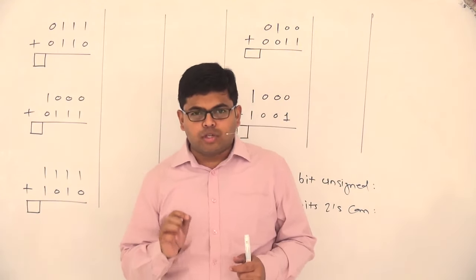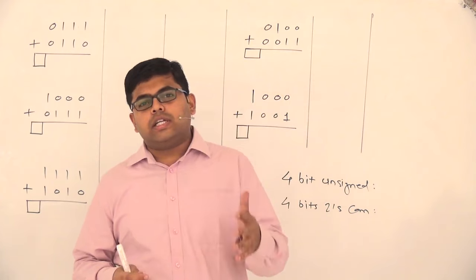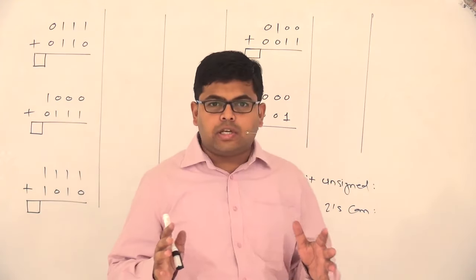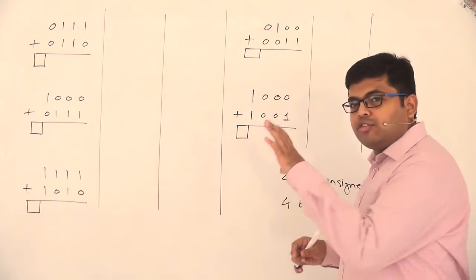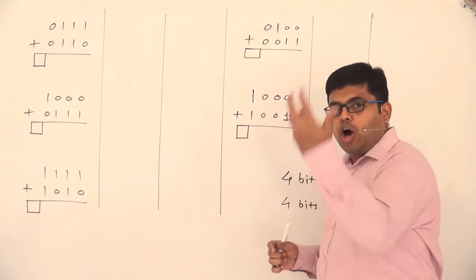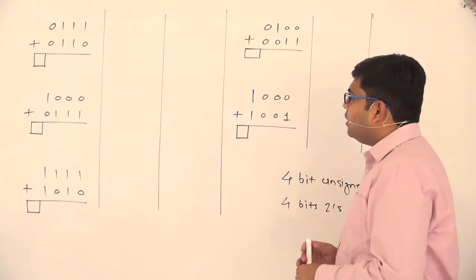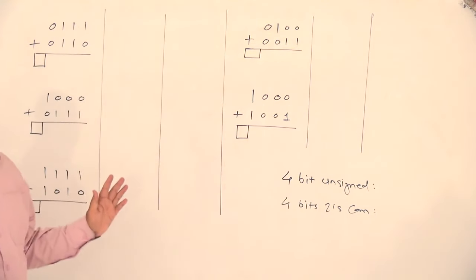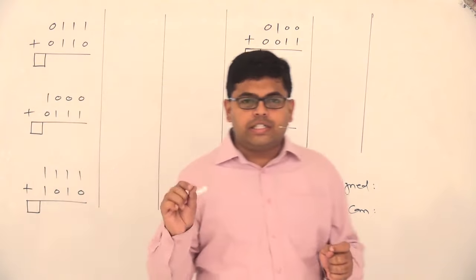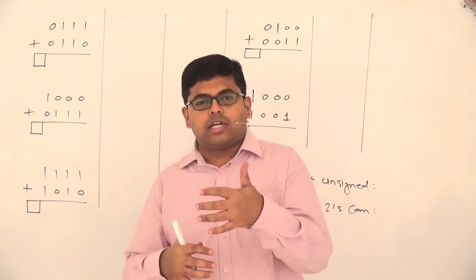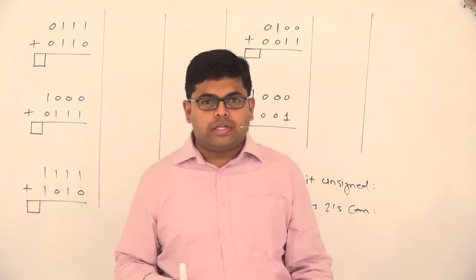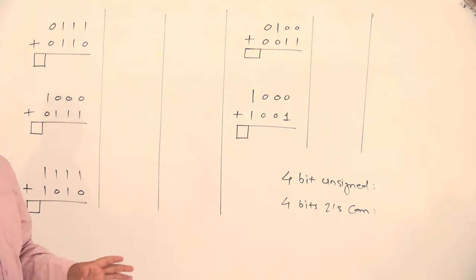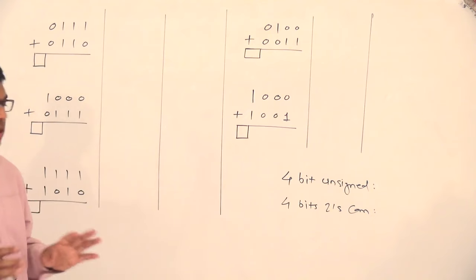In this session, we will look at computer arithmetic, basically addition and subtraction of signed numbers. We will see some examples which I have carefully chosen to exhibit all possible cases that may arise. While doing the addition, we will first do it considering all numbers in unsigned integer representation, and later in two's complement representation. Right now, we look at all numbers as unsigned integers — 4-bit binary numbers without any sign bit.